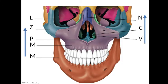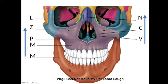And the mnemonic for your facial bones: your vomer, your inferior nasal conchae, your nasal bones, your mandible, your maxilla, your palatine, your zygomatic, and your lacrimal.